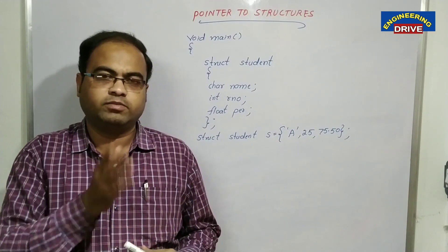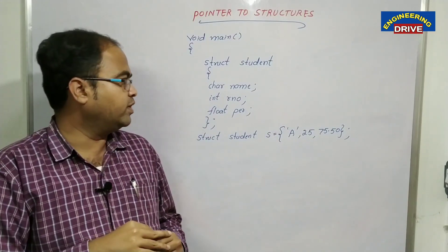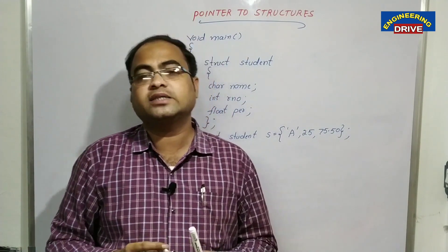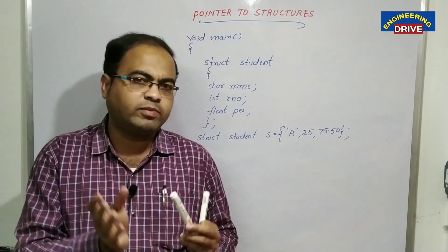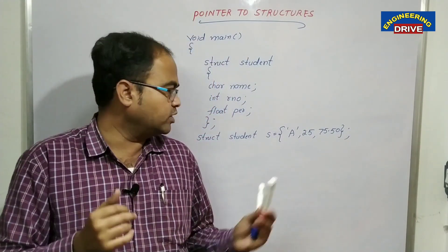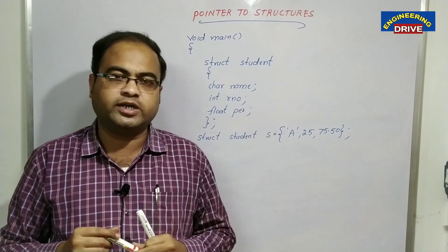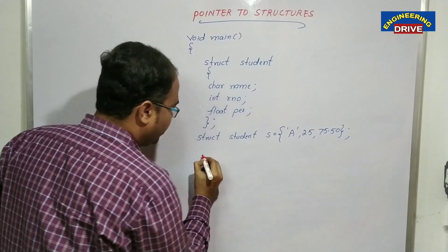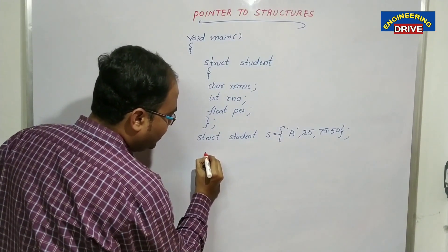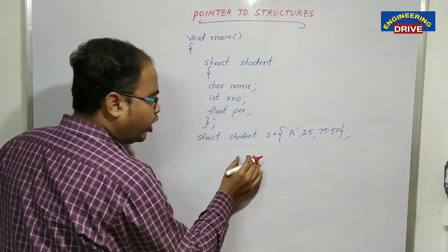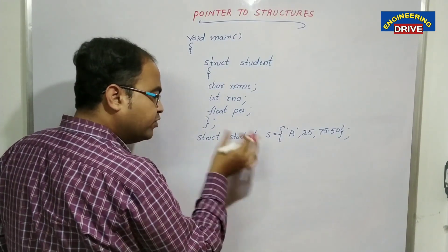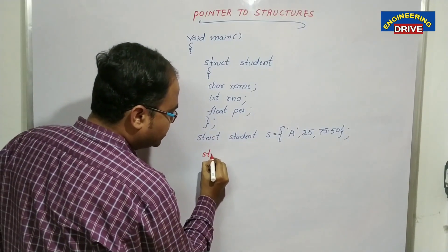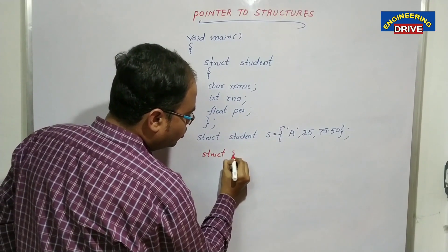Now I want to declare a structure pointer. I want to declare one pointer in which I will store the address of this structure student. The next line is very very important. To declare a pointer for a structure, you need to use the same data type: struct student *ptr.